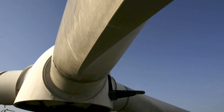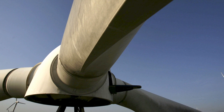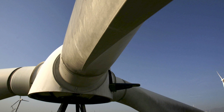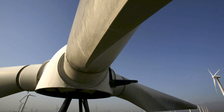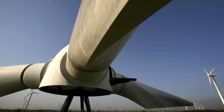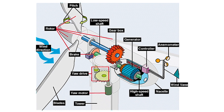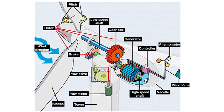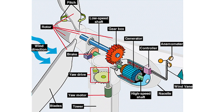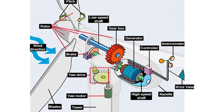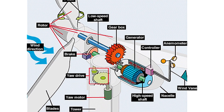The individual turbines use the power of the wind to rotate their large blades, which are connected to an electrical generator by a gearbox. The gears rotate a magnet within the generator that is surrounded by metal coils to produce electricity.